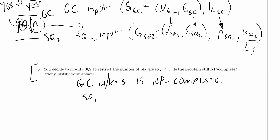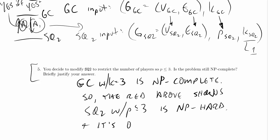So the reduction above shows sq2 with p less than or equal to 3 is NP-hard, and it's obviously still in NP.